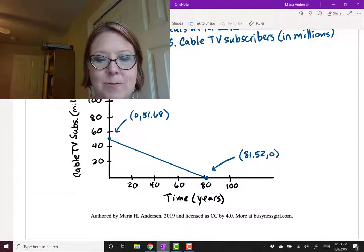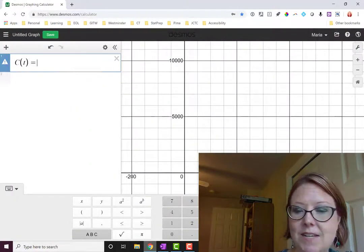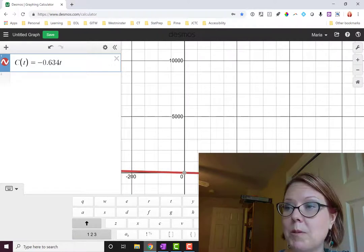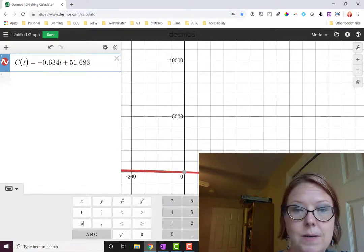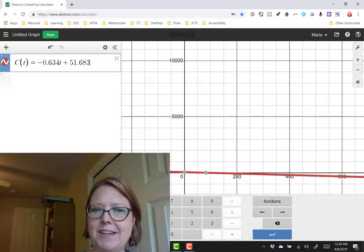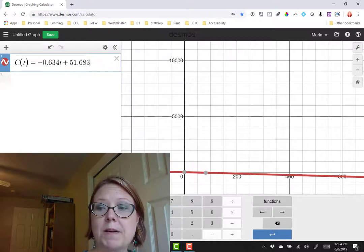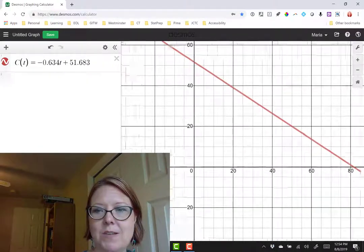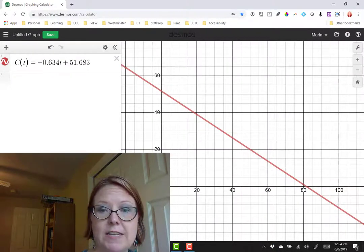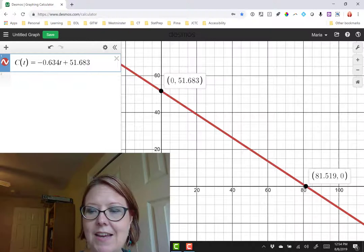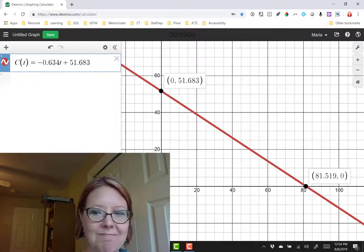The result is a straight line that decreases, starting at 51.68 on the y-axis and ending at 81.52 on the x-axis. Let's double check it by graphing it in Desmos. We'll graph C(t) = -0.634t + 51.683. It might be a good idea to zoom back to the home button and restart. I'll press the home button on the right-hand side of the screen, which zooms me back to the origin, and then pan out a bit so I see the two intercepts. When I touch the y-intercept, I see (0, 51.68). Bingo! And the x-intercept is (81.519, 0). We're good.